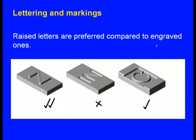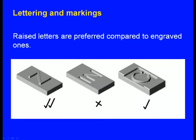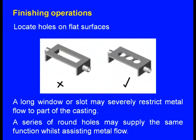For lettering and marking: raised letters are preferred over engraved ones. Engraved letters are not good; raised letters are preferred, and a raised letter inside a pocket is a still better design. For finishing operations: locate holes on flat surfaces. A long window or slot may severely restrict metal flow to part of the casting. A series of round holes may supply the same function while assisting metal flow — several small holes are preferable to one long hole.